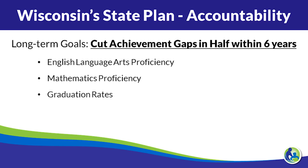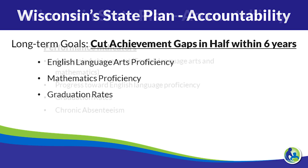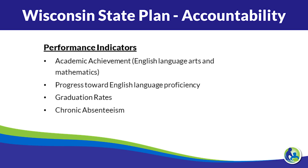We've set goals by subgroup, looking at race, disability, English learner status, and economic status — seeing where people are today and then setting a target goal for each subgroup so that we can accomplish that long-term goal. In terms of accountability, we have a number of performance indicators required under the law, and we've addressed all of those in our state plan.